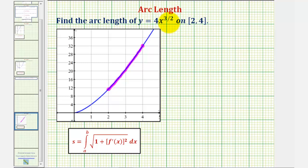Because we have a function of x, we'll be using this arc length formula given here, where the arc length is equal to the integral of the square root of the quantity 1 plus f prime of x squared, integrated with respect to x from a to b.